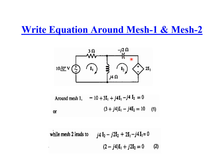Grouping gives the first equation around mesh one. Similarly for mesh two, writing all three terms related to I2: j4*I2 minus j2*I2 plus 2*I2, and then the I1 term minus j4*I1. This is another way of writing, but if you're more comfortable writing I1 minus I2 and I2 minus I1, you can do that and get the same answer.